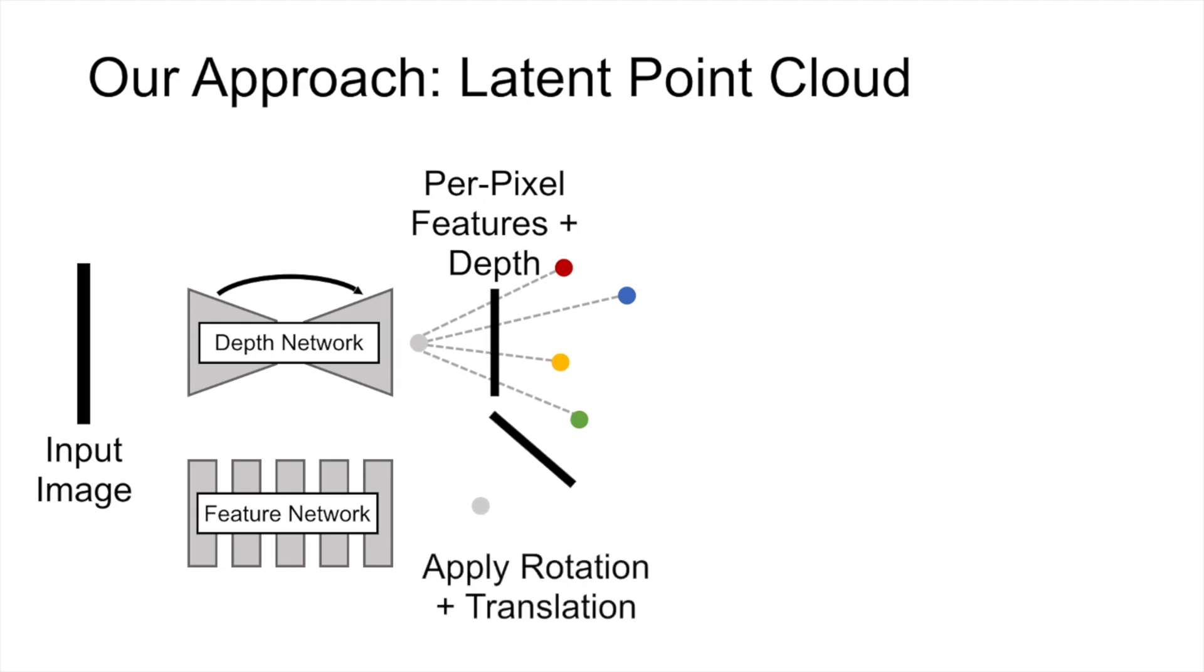We then apply the known camera transformation to view the point cloud at the new viewpoint. Using ideas from traditional graphics approaches, we introduce our differentiable point cloud renderer, which renders these features at the new viewpoint. This gives us a set of projected features.